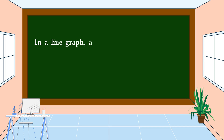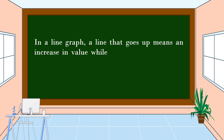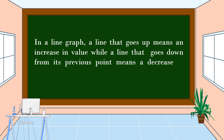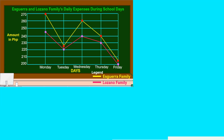In a line graph, a line that goes up means an increase in value, while a line that goes down from its previous point means a decrease in value. We have already constructed a single and double line graph; this time we're going to interpret the graph.